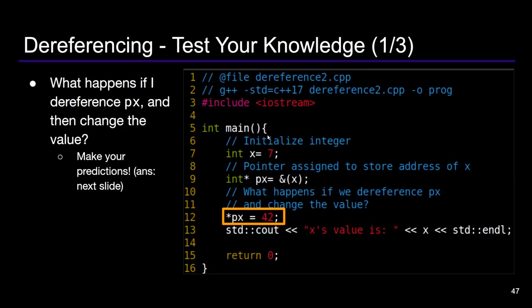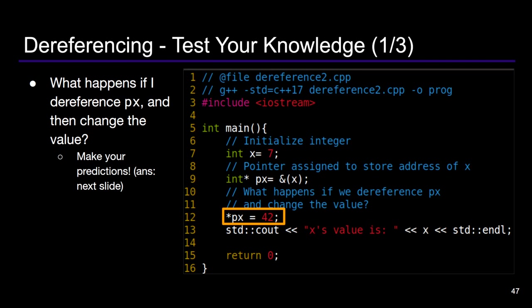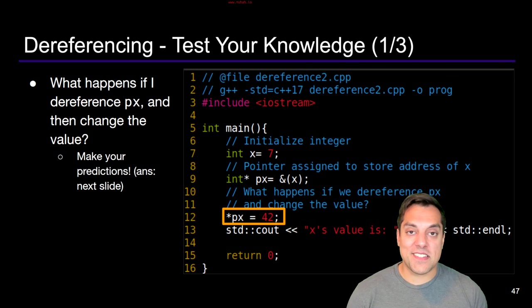Here's a little test for you. I want you to think about and read this code before you proceed. What happens if I dereference px and then change the value? We're going to initialize integer x equals seven, assign the address of x to a pointer px which can store integers, and then dereference px and assign it to 42. Go ahead and pause and think about what the value is going to be. Even better, go ahead and try to write this example, run it, and see if it tests your assumption.